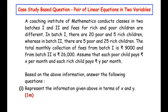Let us understand the question first. There is a coaching institute that conducts classes in batch 1 and batch 2, with different fees for rich and poor children. Batch 1 has 20 poor and 5 rich children with total monthly fees of rupees 9,000. Batch 2 has 5 poor children and 25 rich children with monthly fees of rupees 26,000. In sub-question 1 we have to represent this information in terms of x and y.